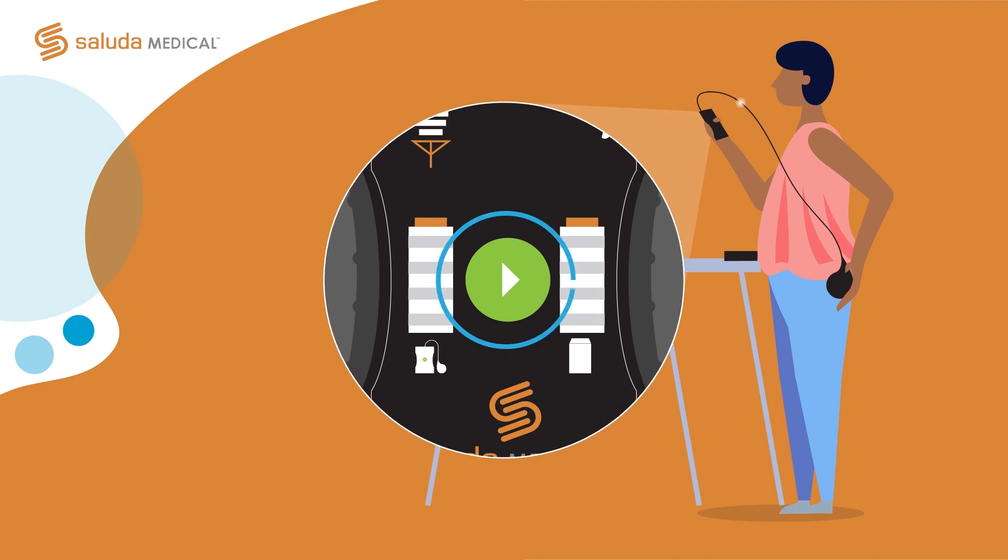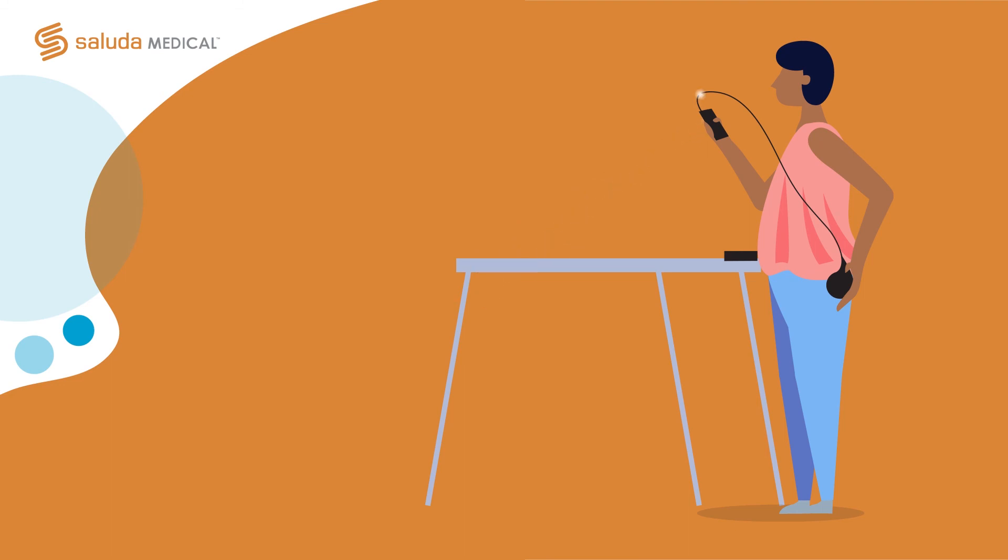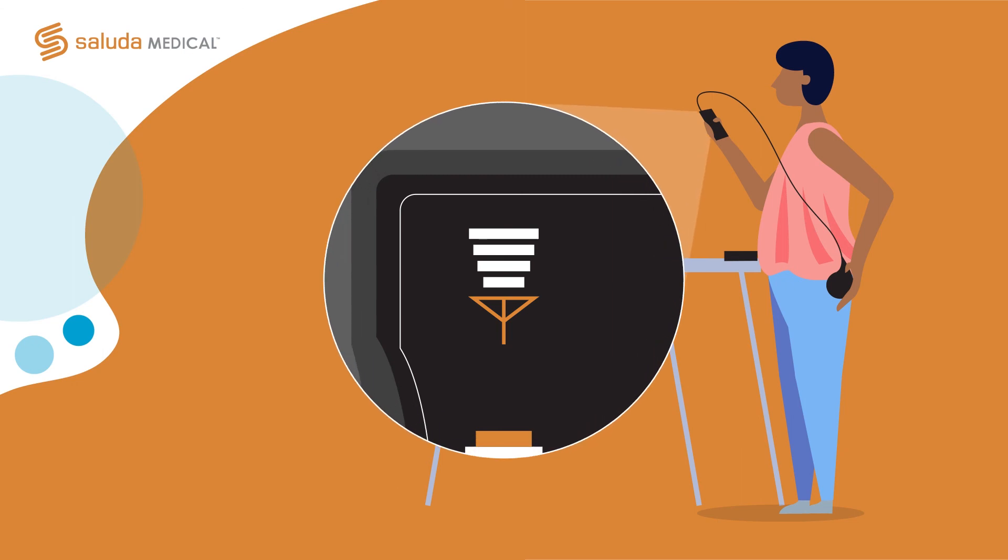Press and hold the green button for more than one second. The charger will beep every second until the coil is aligned with the stimulator. The charging link indicator will then show at least two bars. Move the charger coil until the link is strongest. The charging link indicator should then show three or four bars.